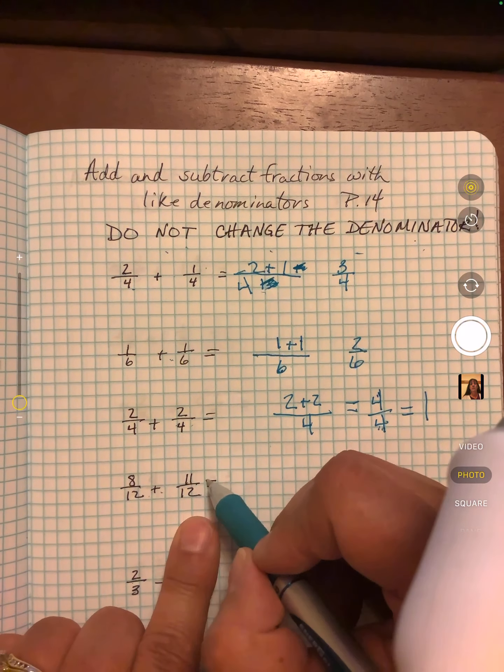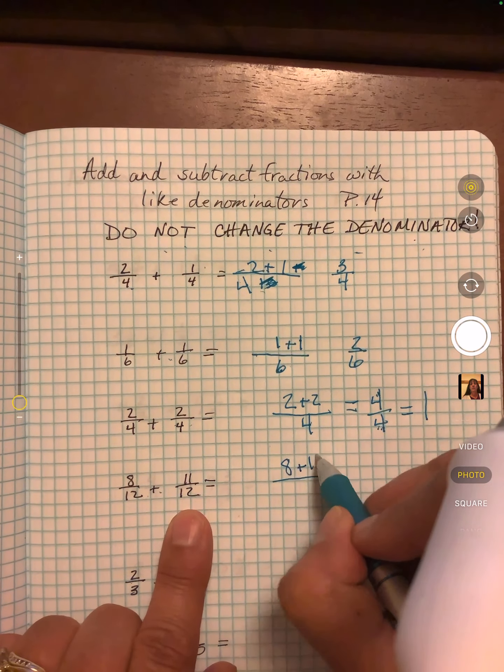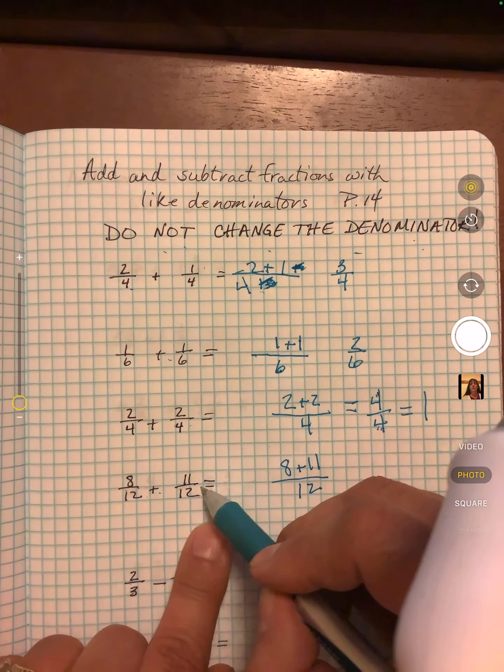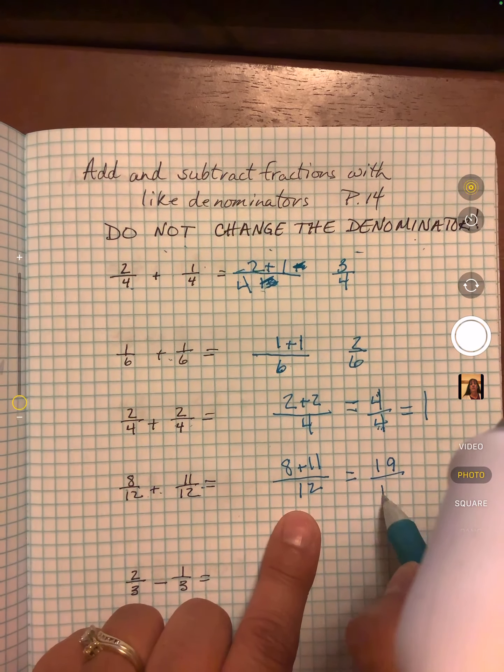Eight twelfths plus eleven twelfths. Eight plus eleven and then I have twelfths underneath because they're both twelve twelfths. We end up with nineteen twelfths.